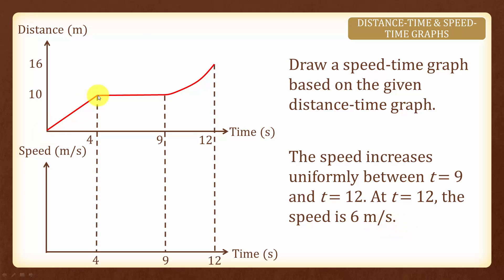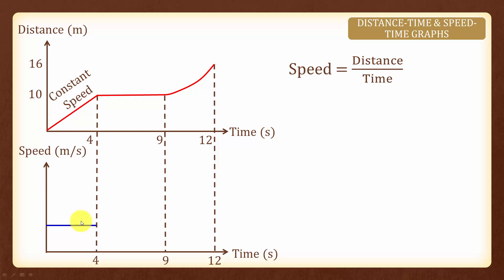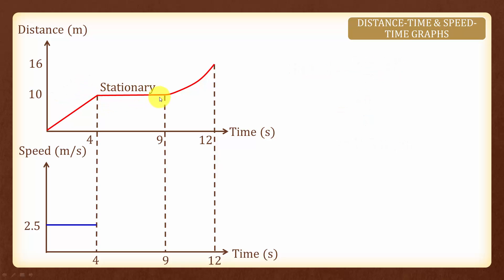For the first 4 seconds under the distance time graph, we have an upward sloping straight line. This means that the object is travelling at constant speed, which is represented by a horizontal line on the speed time graph. The speed is distance divided by time: 10 divided by 4, which gives us 2.5 meters per second. Next, the object is stationary as there is no change in distance. Therefore, if the object is stationary, the speed is 0 and we will have a horizontal line at zero.